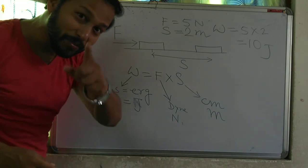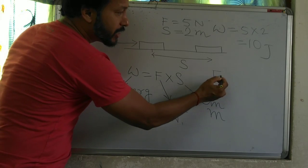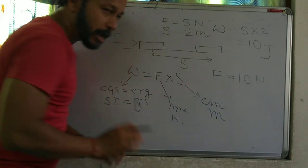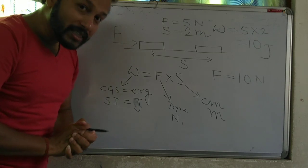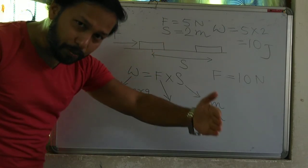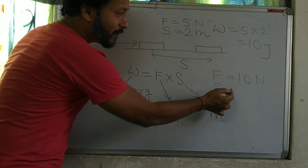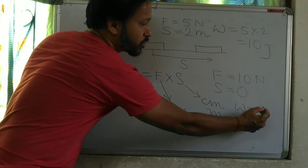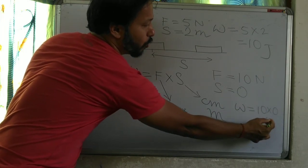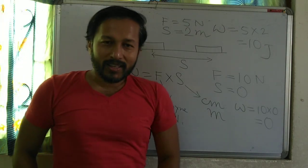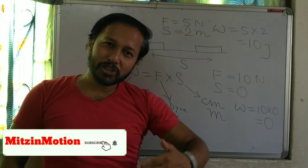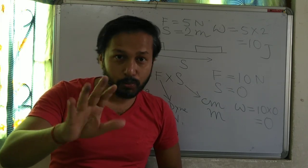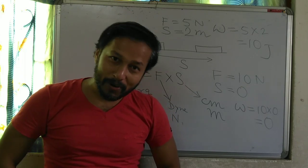Force is there, but displacement is 0. Say I have applied a force of 10 Newton to displace my wall, but the wall did not change its place, so displacement equals 0. Therefore, work done equals force into displacement, that is 10 into 0, which equals 0. So my work done is 0. When you apply force on an object and the object changes its place, you have done some work. But if the object has not changed its position, you have not done any work.